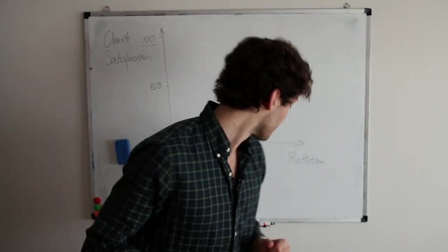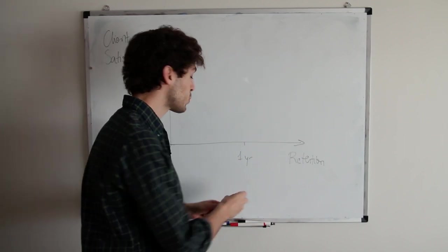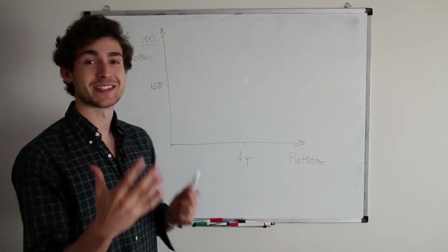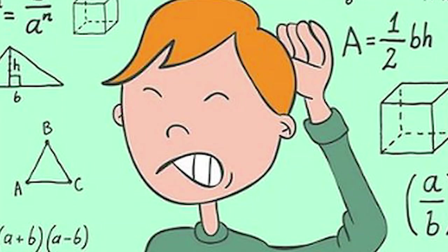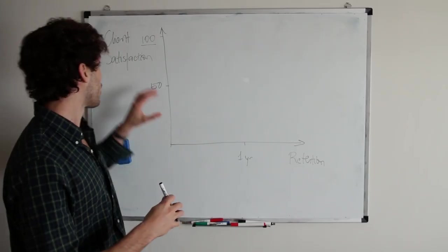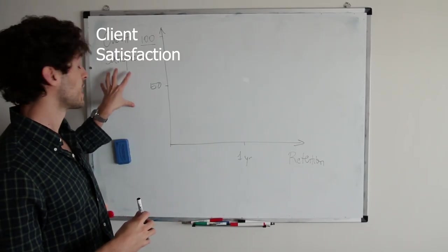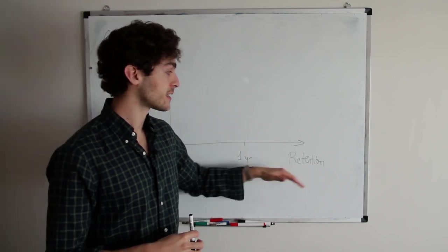Right here, as we can see, let me get my pen. As we can see, we've got a graph. I'm gonna take you guys back to sixth grade math, but we've got in the Y-axis, we've got client satisfaction and in the X-axis, we've got retention.